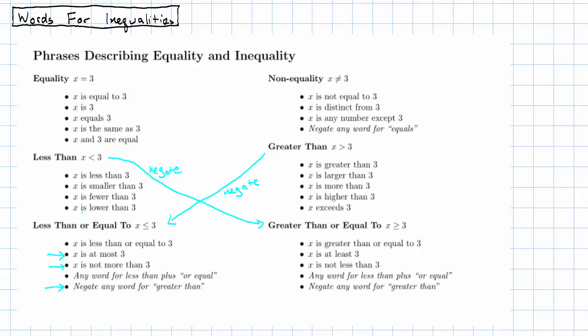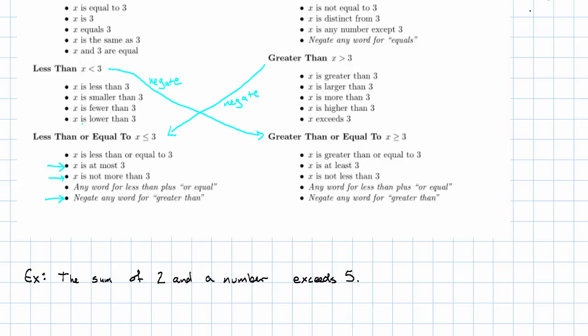Let's see an example. Suppose we're told that the sum of 2 and a number exceeds 5. Exceeds is the verb in this sentence; it means greater than. So we're going to have an inequality with a greater than in it.